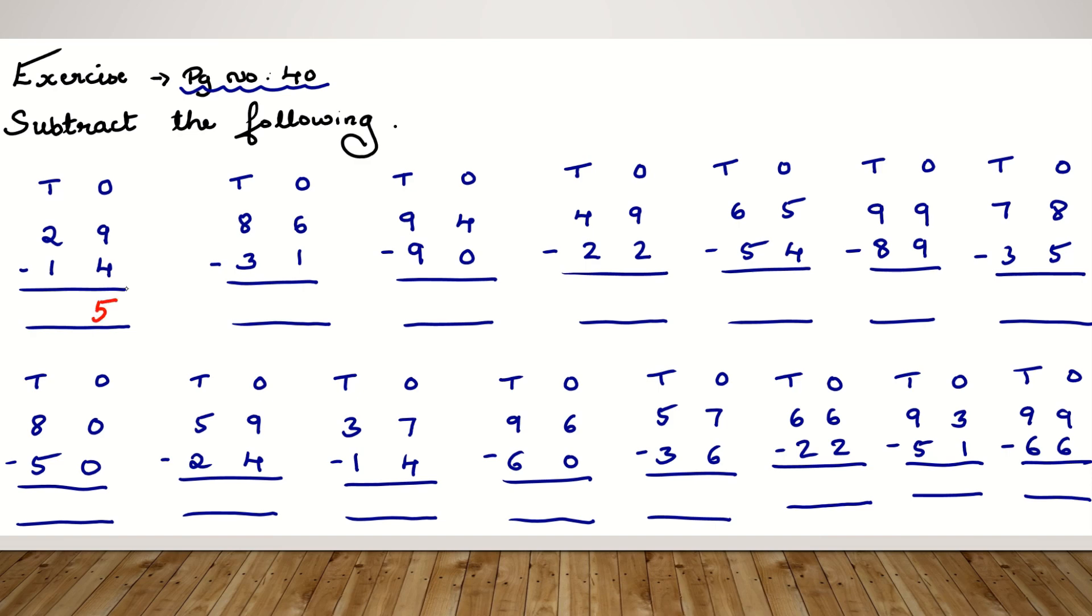So 9 minus 4 is 5. Now the second step is subtract the 10s column. In 10s column the numbers are 2 tens and 1 tens. So 2 lines draw and cancel 1 line. So remaining is 1. The answer we get here is 15.